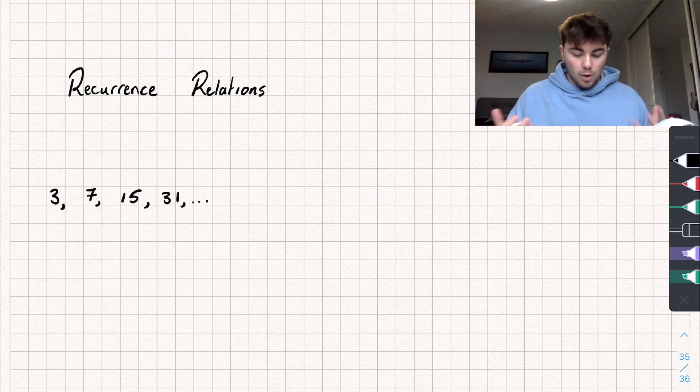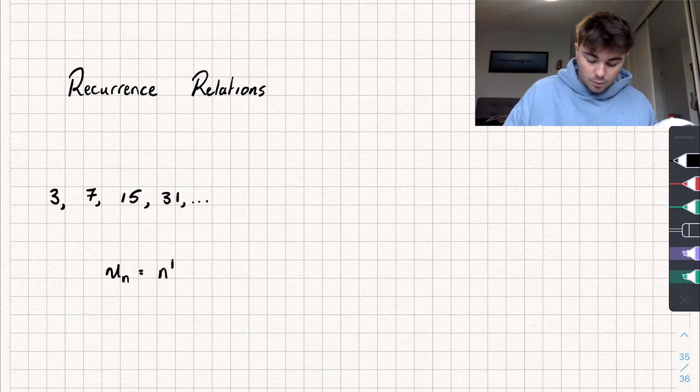Now before I write down how it works, we just need to get used to some notation. If we write u_n, u subscript n, that equals the nth term of the sequence.